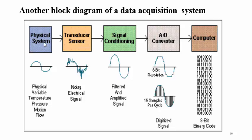We will see one more simplified block diagram of the data acquisition system. In this block diagram we can see the physical system from where we are going to sense the physical parameter of any kind — for example temperature, pressure, motion related information, or any flow based information.